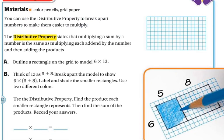For example, A says to outline a rectangle on the grid that's a model of 6 by 13. So let's do that. So I'm going to go over 1, 2, 3, 4, 5, 6, 7, 8, 9, 10, 11, 12, 13. And I'm going to go down 6: 1, 2, 3, 4, 5, 6. So here is my 6 by 13.